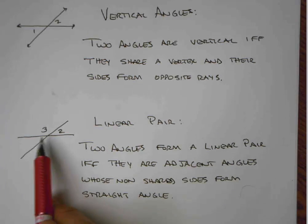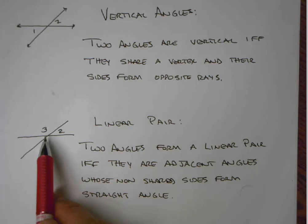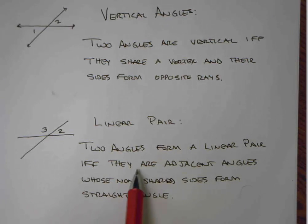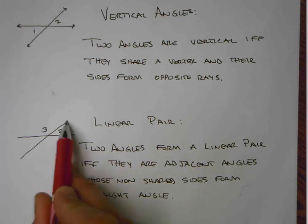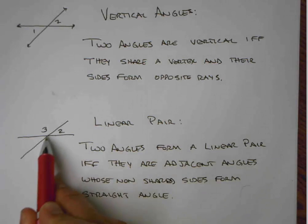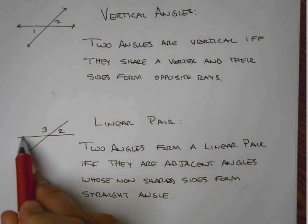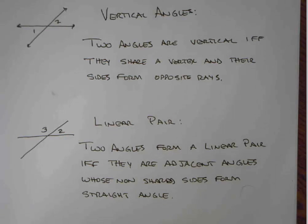The second pair of relationships we see when two lines intersect is called a linear pair. Two angles form a linear pair if and only if they are adjacent angles whose non-shared sides form a straight angle. Here's an angle and here's an angle — this is their shared side, and their non-shared sides together form a straight angle or opposite rays. But they have one shared side, which is what makes it different.